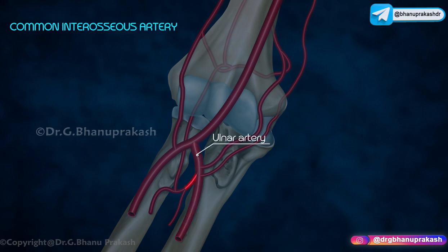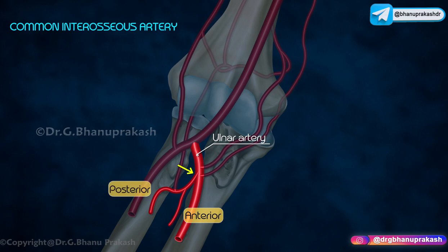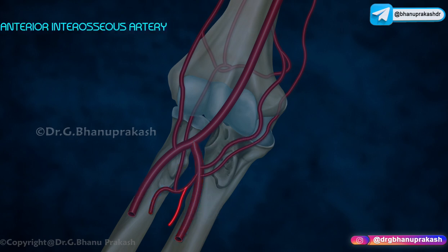The common interosseous artery is a branch of the ulnar artery that arises near its origin and bifurcates almost immediately into the anterior and posterior interosseous arteries.